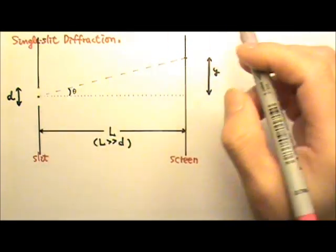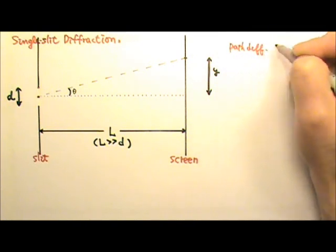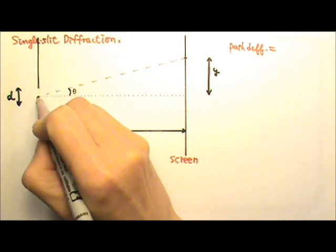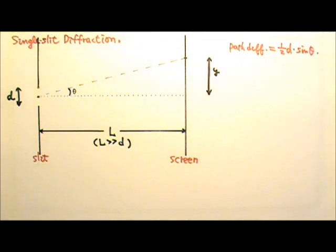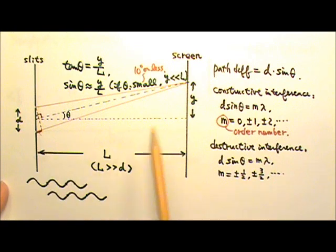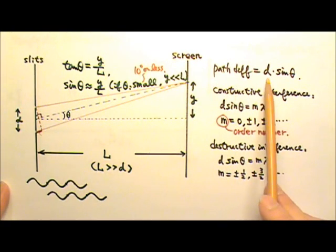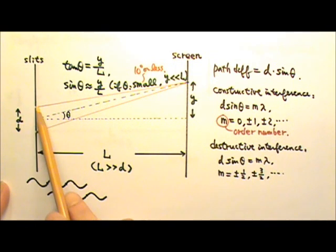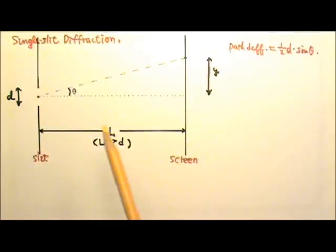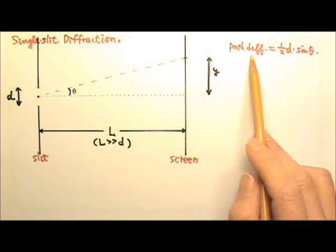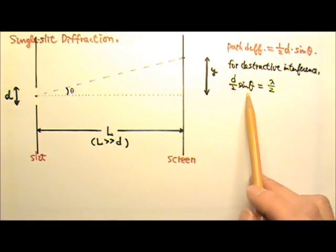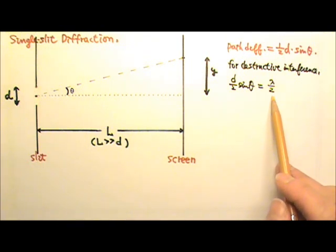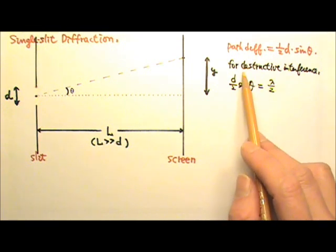The path difference between these two would equal half D times sine theta. This is exactly the same as the double slit case, where the path difference is D sine theta when the distance between the two wavelet sources is D. Here, the distance is half D, so the path difference is half D sine theta. For destructive interference, half D sine theta should equal half the wavelength, so that peaks meet with troughs.